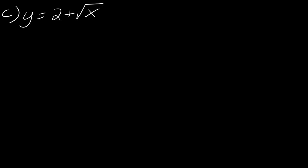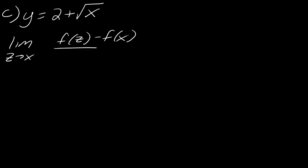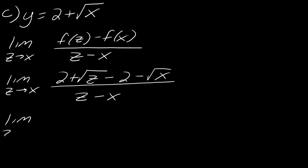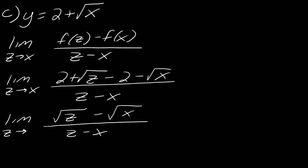Moving on to the last example: I need to take the limit as z approaches x of f(z) minus f(x) over z minus x. Plugging in, this becomes (2 plus the square root of z) minus (2 plus the square root of x), all over z minus x. The 2's cancel, leaving the square root of z minus the square root of x, all over z minus x.